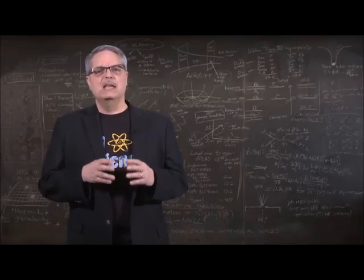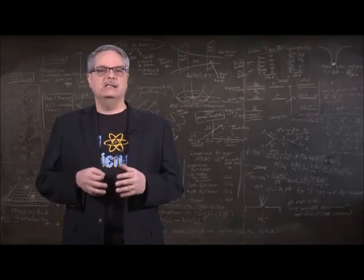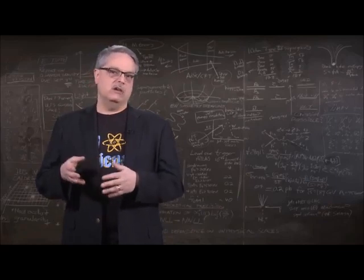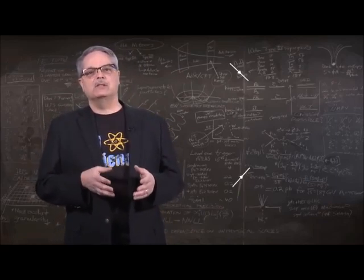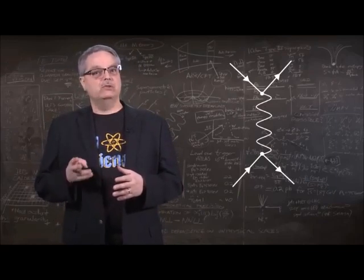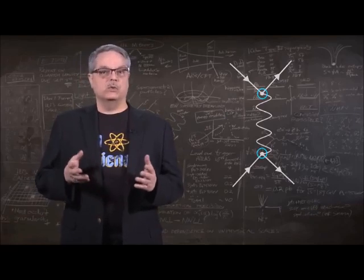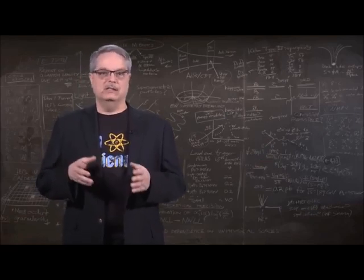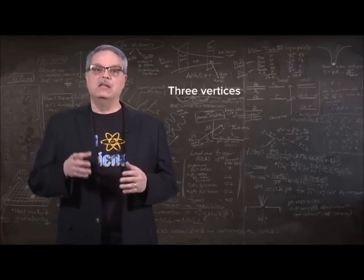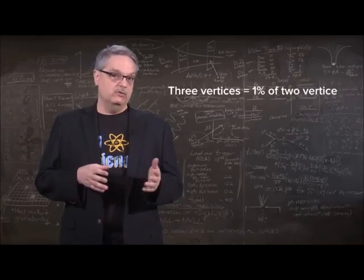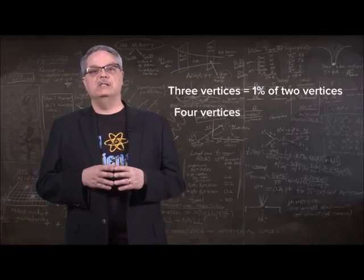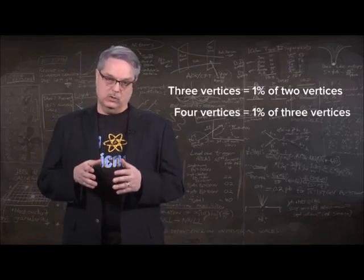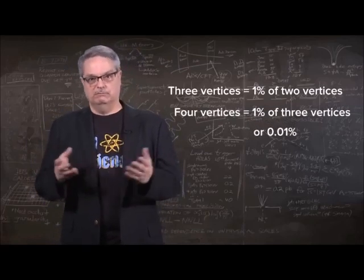In practical terms, that means we can simply count vertices and get a sense of how much each diagram contributes. The simplest electron scattering Feynman diagram has two vertices. There are no pictures with three vertices that have two electrons in and two out, but if there were, they would happen about 1% as often as the two-vertex case. Four vertices would be 1% of 1%, or 0.01%, etc.